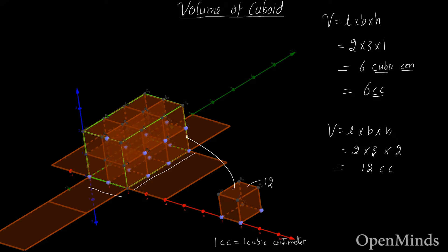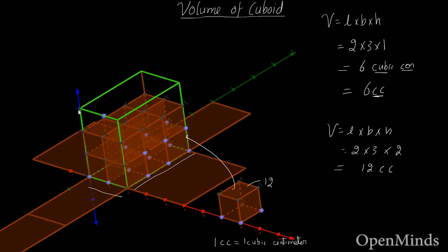So we can place twelve of these unit cubes inside when the dimensions are two times three times two. Now if we increase the height of the box again, the box gets bigger and we can fit more cubes. With dimensions two times three times three, the volume becomes eighteen cubic centimeters — we can fit eighteen unit cubes inside.